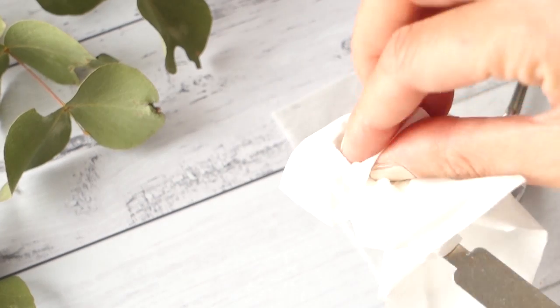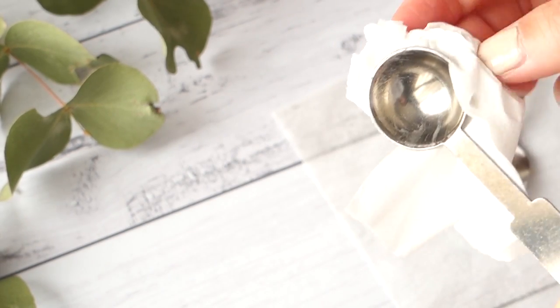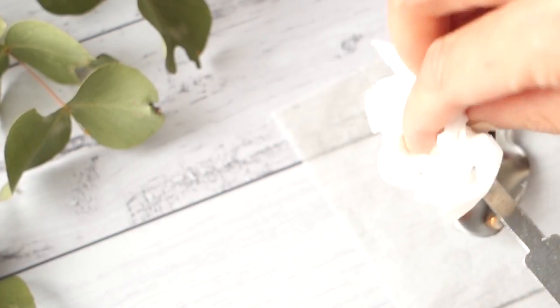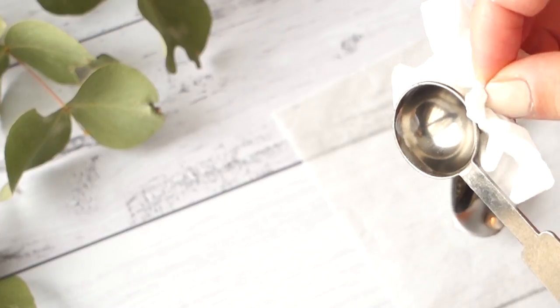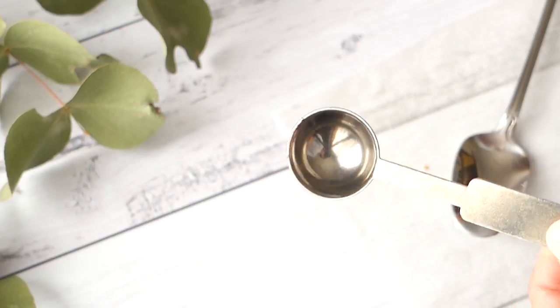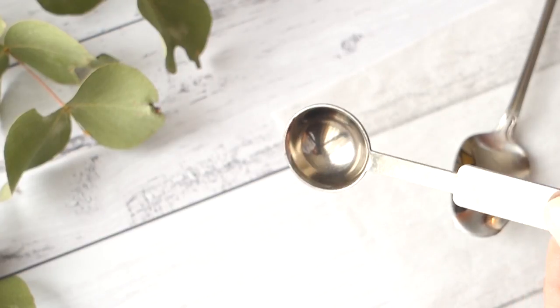Otherwise, just grab a tissue and wipe the spoon until all the wax has come off. The metal can get quite hot, so just be a bit careful. And now your spoon is all nice and clean, ready for the next wax seal.